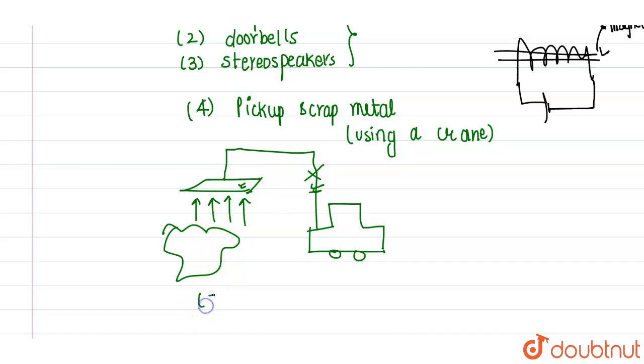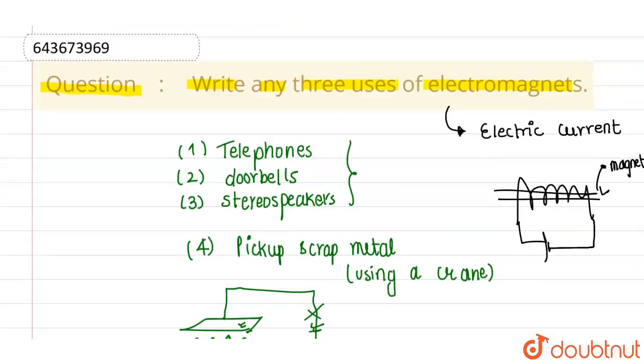So this is how you can use electromagnet in picking up scrap metal. And the last use is in electric motor. In electric motor also we can use electromagnet. So these are the certain uses. I hope you understood. Thank you.